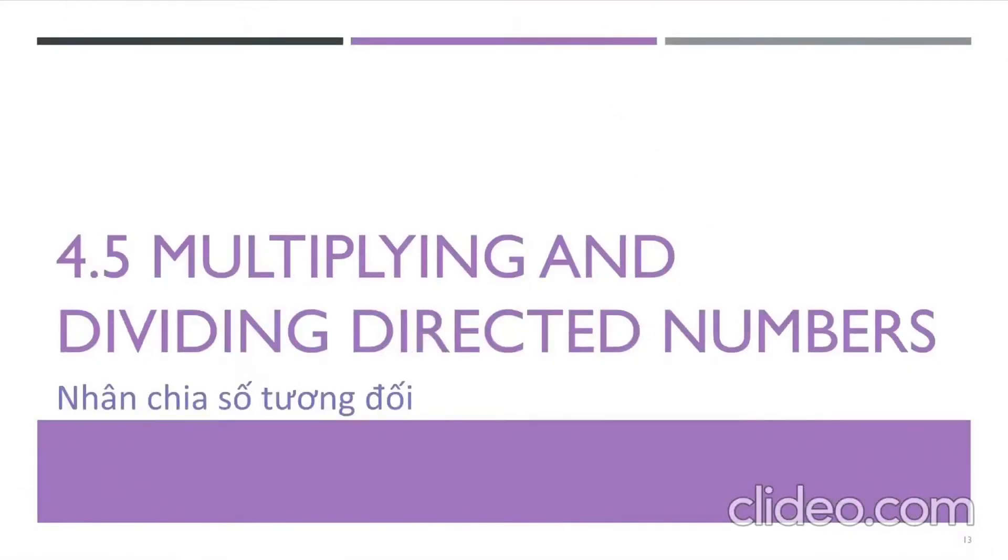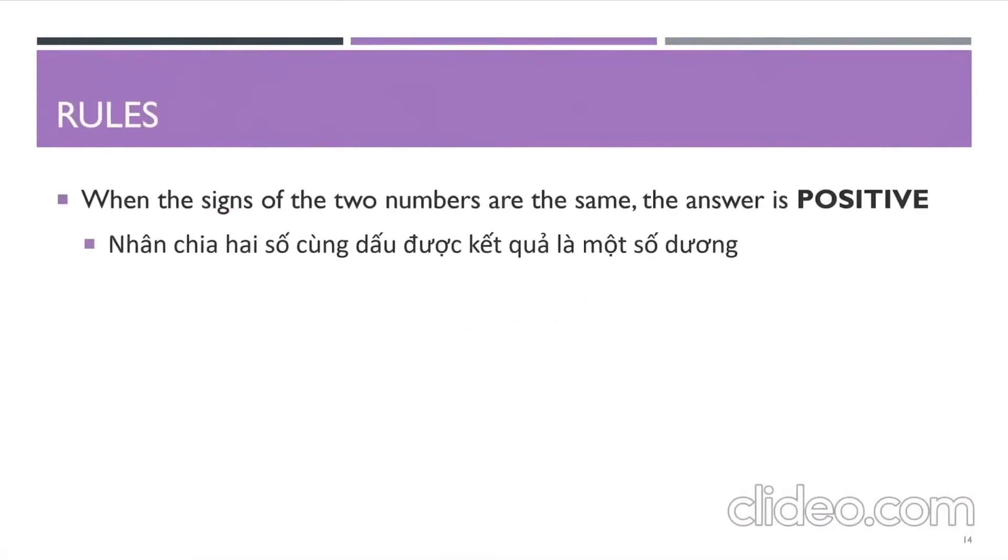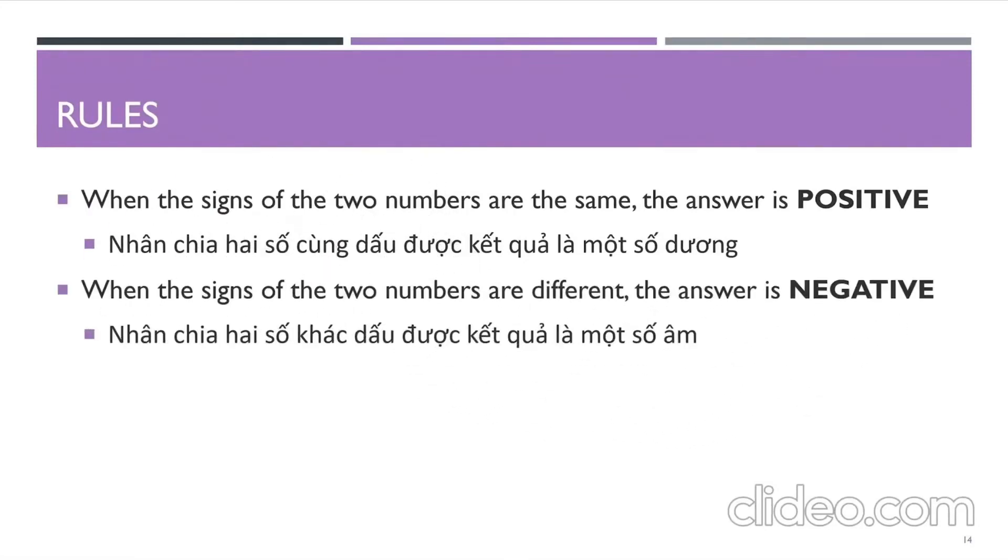Last but not least, multiplying and dividing directed numbers. Here we have some important rules. When the signs of the two numbers are the same, then the answer is positive. But when they are different, the number is negative. We gave you some easy questions as examples. The answers are clear, so it's easy, right?